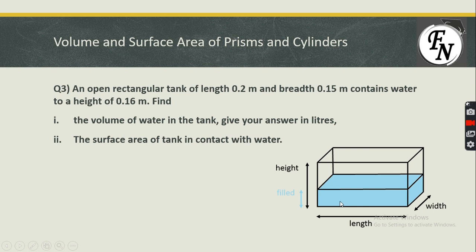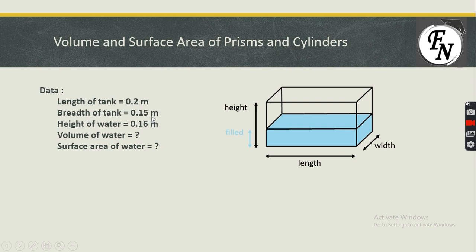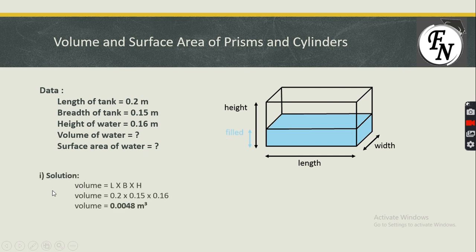The data: length of tank = 0.2 meters, breadth = 0.15 meters, height of water = 0.16 meters. We need to calculate the volume and surface area of water. Since the liquid takes the shape of the container, we use the cuboid formula — but we use the height of the water, not the full cuboid height, as the full cuboid height is not given.